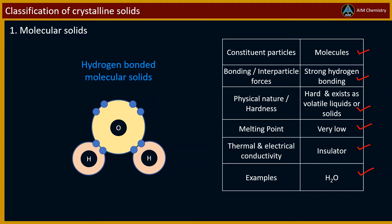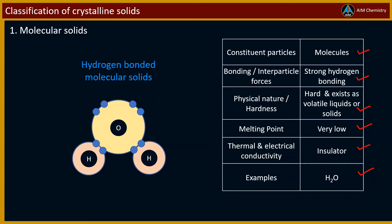Second type of crystalline solids is ionic solids. Constituent particles in ionic solids are ions. In these solids, ions are held by strong coulombic or electrostatic force.